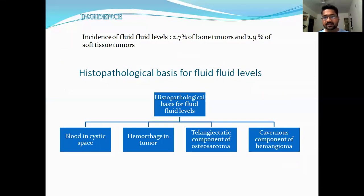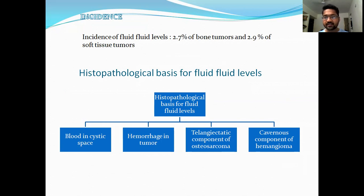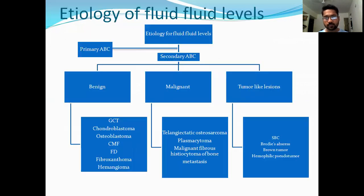First of all, we discuss about the incidence of fluid-fluid levels in bone tumors. This is 2.7% in case of bone tumors and 2.9% in case of soft tissue tumors. The basis for fluid-fluid levels could be blood, hemorrhage in the tumor, the telangiectatic component of the tumor, or the cavernous component.